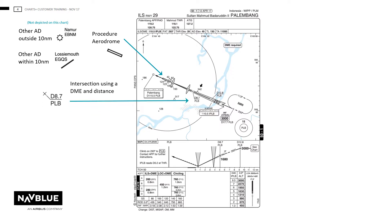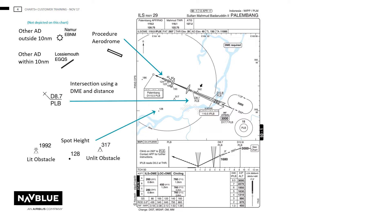Any intersections based off a DME. Obstacle or spot heights, according to the AIP, provided they are higher than the elevation of the lowest usable runway threshold. Coastline, rivers and built up areas are to be shown in the exact location.